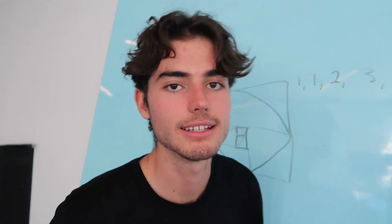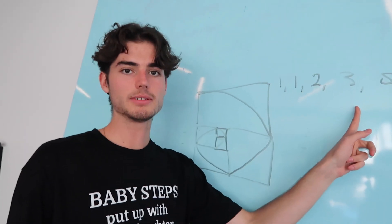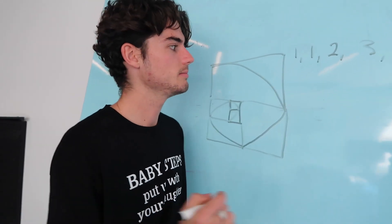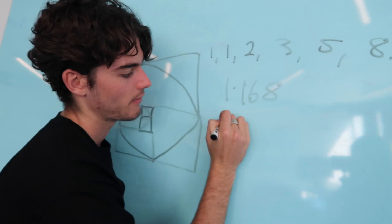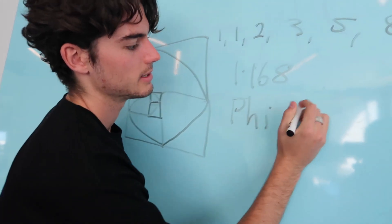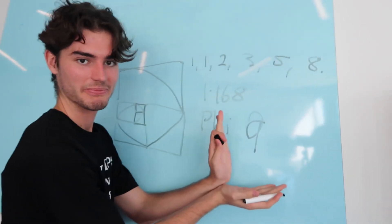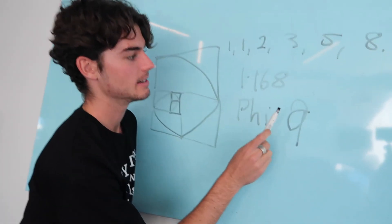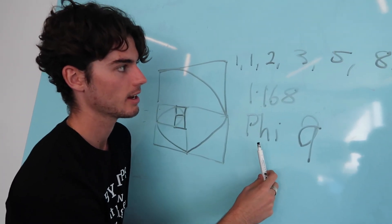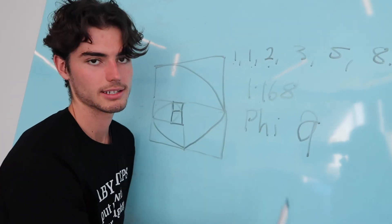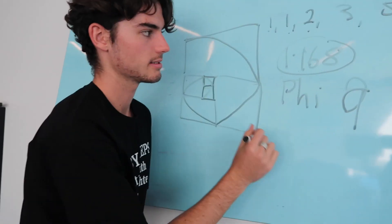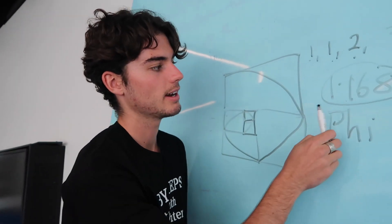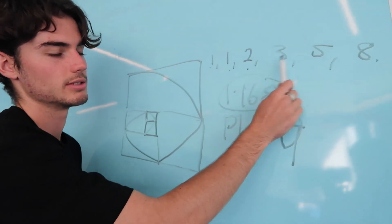Now that we've looked at the Fibonacci sequence, from it we can get the golden mean. The golden mean is a ratio — it is the ratio 1.168, and in Greek it's also called phi. The way we get this phi number is if we take two consecutive numbers and find the ratios of each. Since it's such a small number, we won't find this exact value here, but as the numbers get bigger — going to the thousands in the Fibonacci sequence — we will be able to find this ratio when we follow two consecutive sequence numbers.